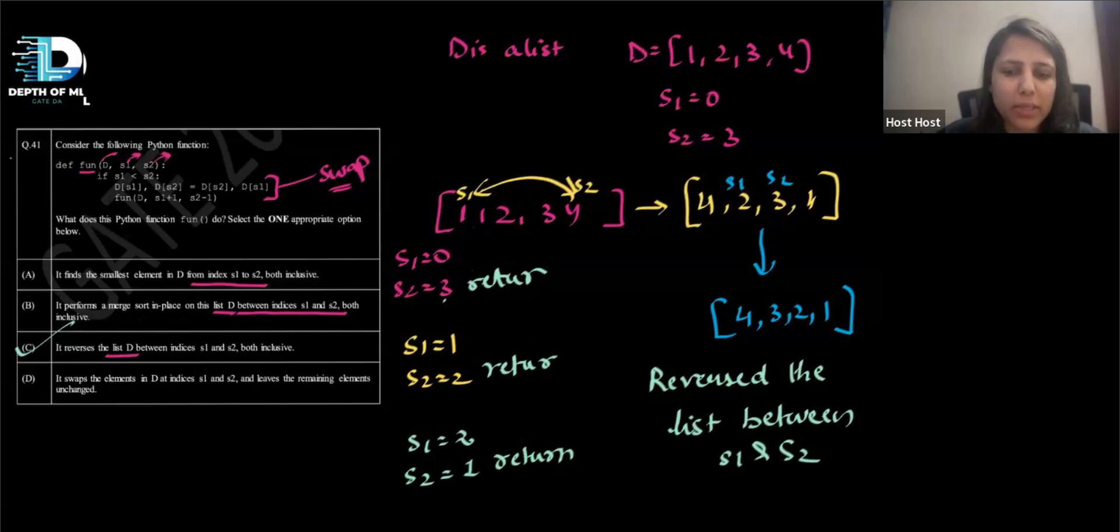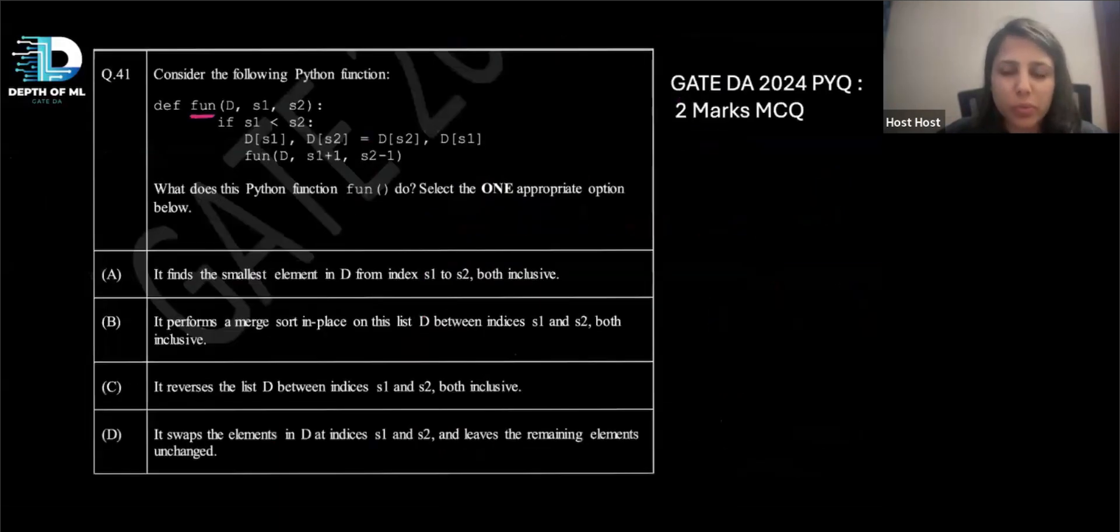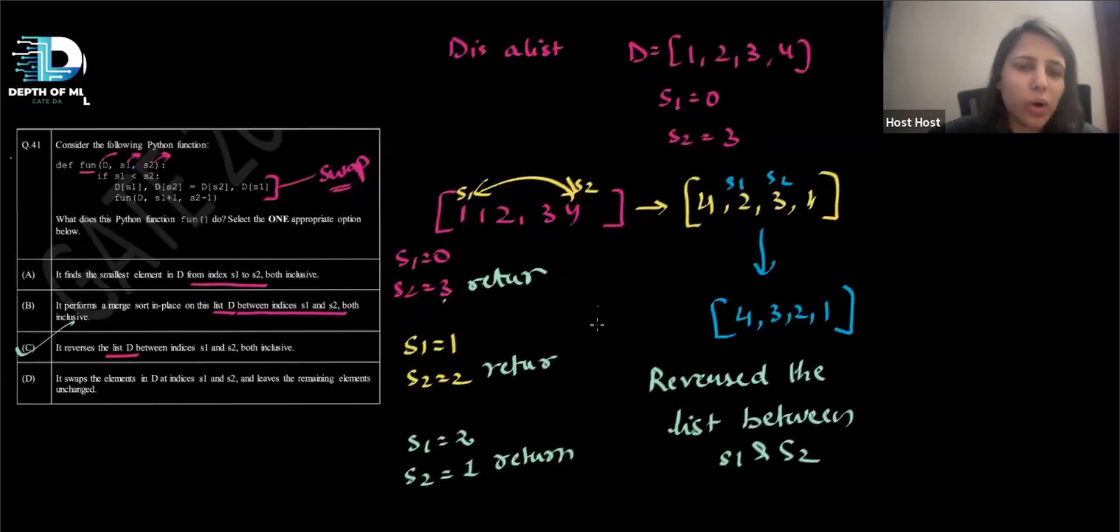So C is the solution for this. And this is the 2 marks MCQ. So this was a very easy question. So if you know how the recursion works, you can solve both of the questions that were there in the gate DA exam. So recursion seems to be an important topic from the point of view of gate DA. So keep practicing that.